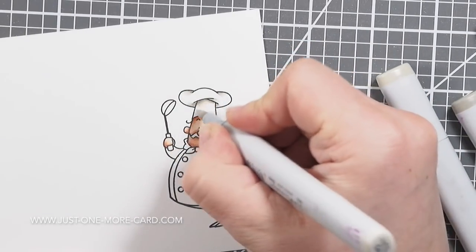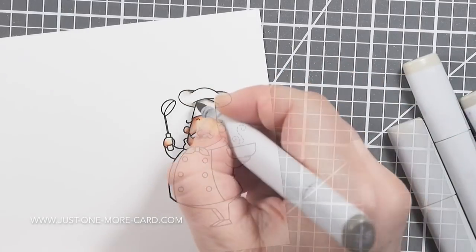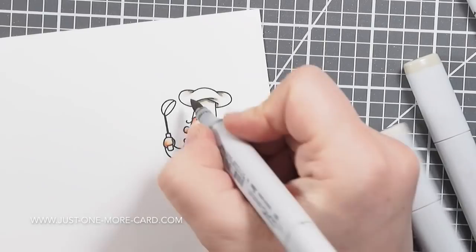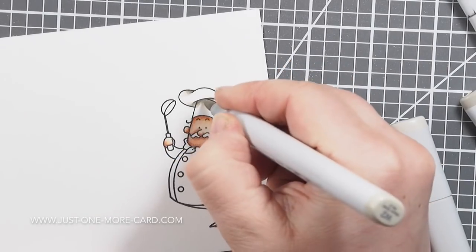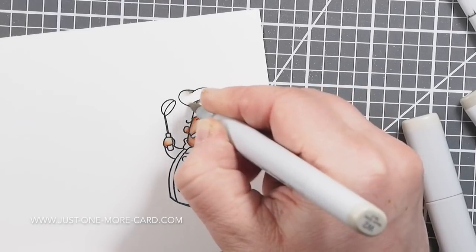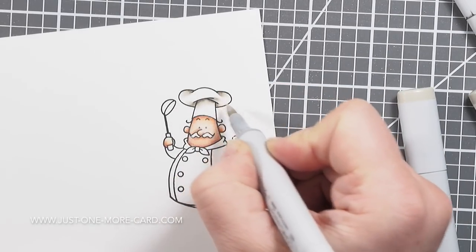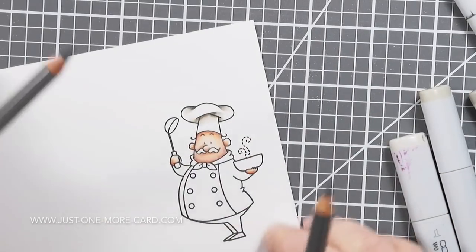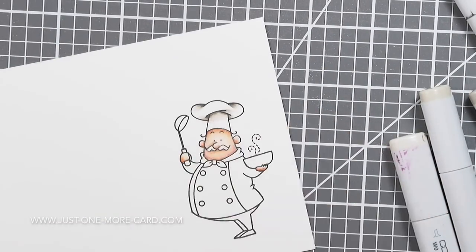You can see here already that for my coloring, what I actually quite often do is I go in with my Copic markers and lay down the first layer of color with the Copics because the Copics you can blend them quite easily. But what I find often difficult is adding very fine detail, simply because maybe I haven't got the motor skills to actually do that.